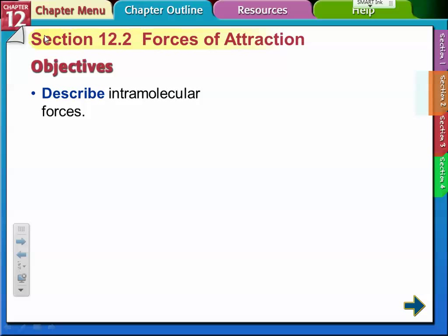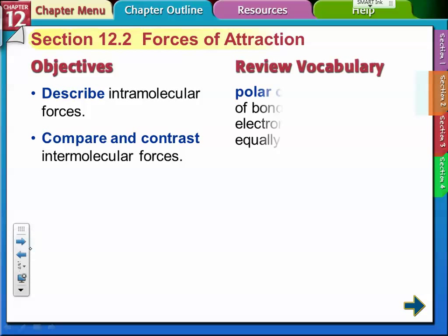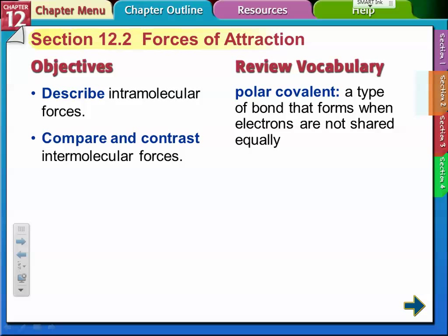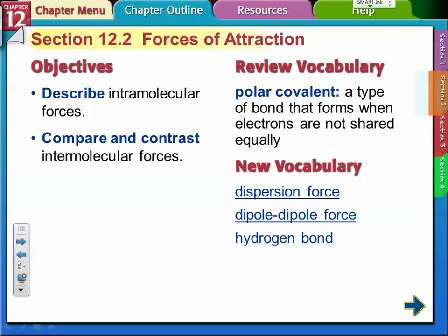This is section 12.2. We're going to talk about forces of attraction. We're going to describe what intermolecular forces are and compare and contrast those intermolecular forces. Polar covalent bonds are a type of bond that happens when electrons are not shared equally. Dispersion forces, dipole-dipole forces, hydrogen bonds.